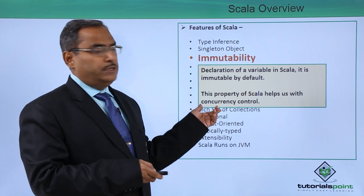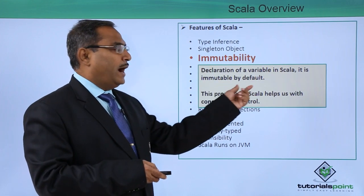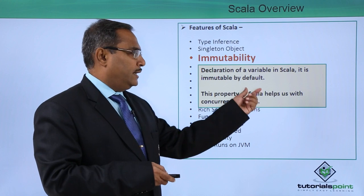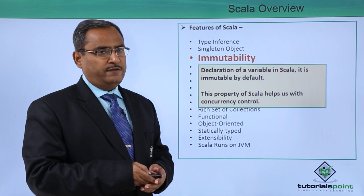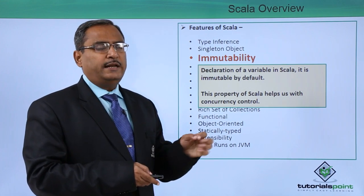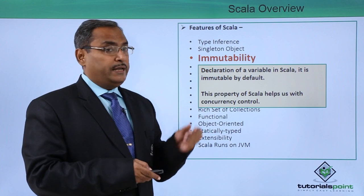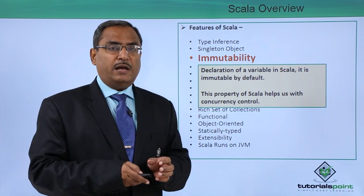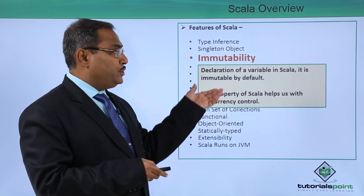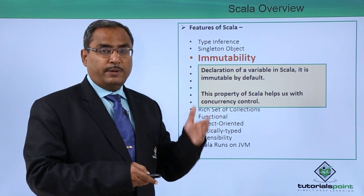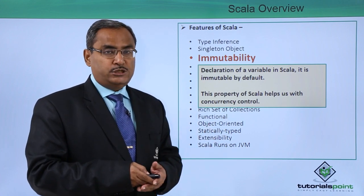The next feature is immutability. Declaration of a variable in Scala is immutable by default. When we write 'val myVar1 = 10', the value of myVar1 cannot be changed or altered. This property of immutability helps us with concurrency control and to develop applications in a distributed environment.